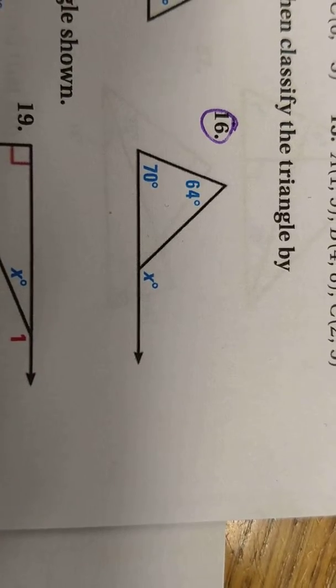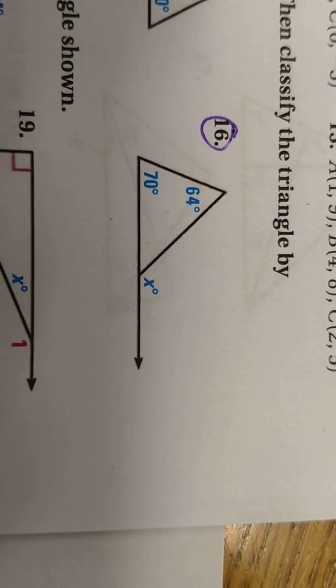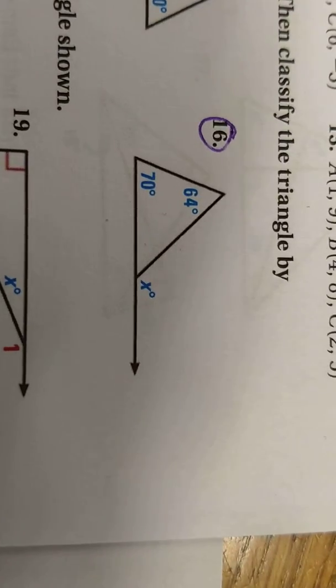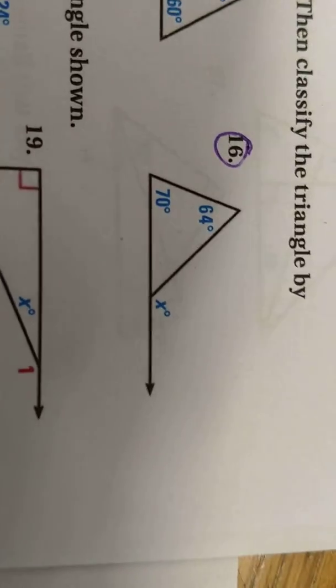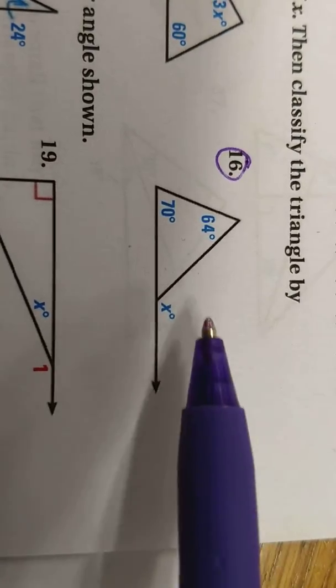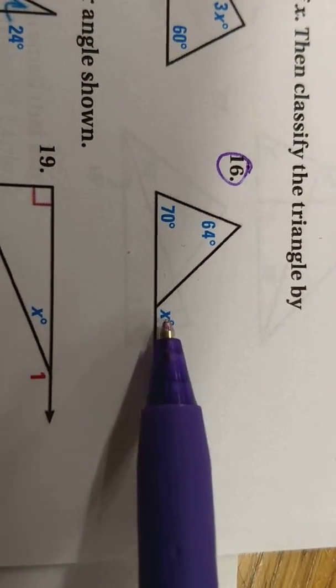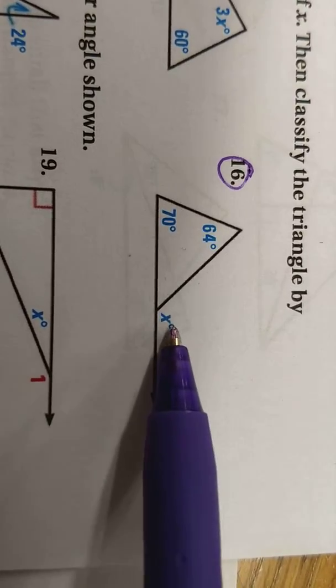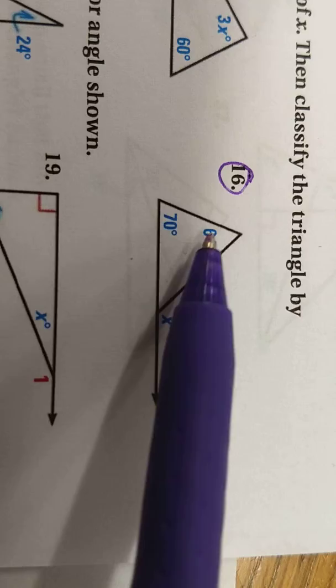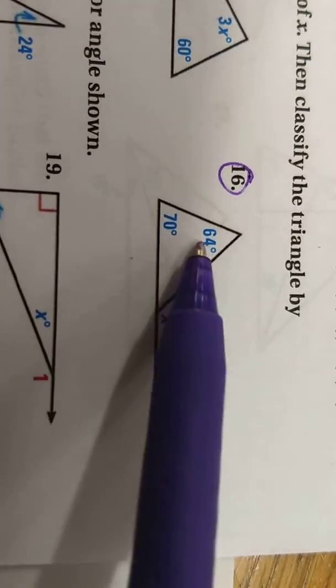We're looking for the value of x, that exterior angle there. If you remember the exterior angle sum theorem, that simply says that if you've got an exterior angle on the outside of a triangle like this, it's going to be the same as the two opposite interior angles combined.